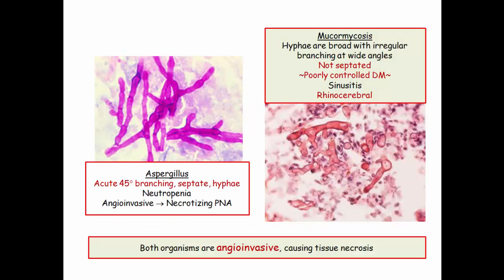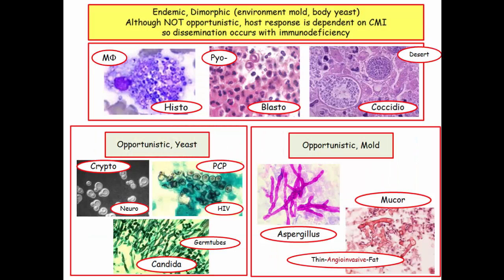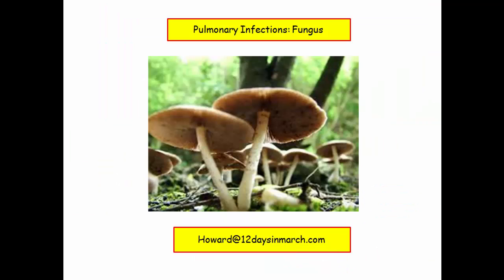Here you can compare and contrast these two molds. Both are angioinvasive, but they have different ecologies and organ manifestations — aspergillus characterized by necrotizing pneumonia and mucor by rhinocerebral necrosis and eschar formation. The morphologies, other than both being hyphae, could not be more different in terms of septation and branching. And those, my friends, are the eight pulmonary fungal infections to be aware of, each with very distinct and unique characteristics. Once you get past being incredulous that they want you to learn fungal morphology, the questions are very doable. If you have any questions about the material presented, please email me at 12 Days in March. Thank you.